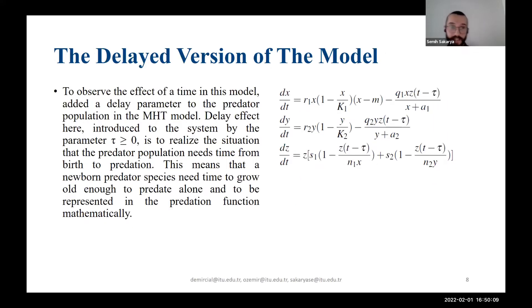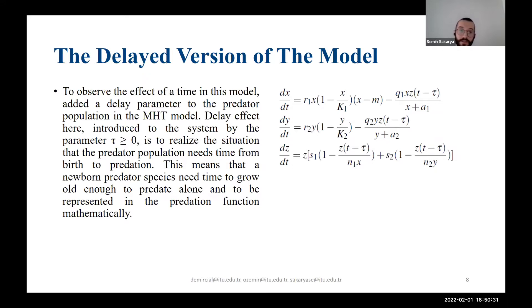You can see the delayed version of our model. We use the delay parameter tau for only the predator species z, in order to realize the situation that a predator population needs some time from birth to predation. This means a newborn predator species needs some time to grow old enough to predate on its own, represented mathematically in the predation function.